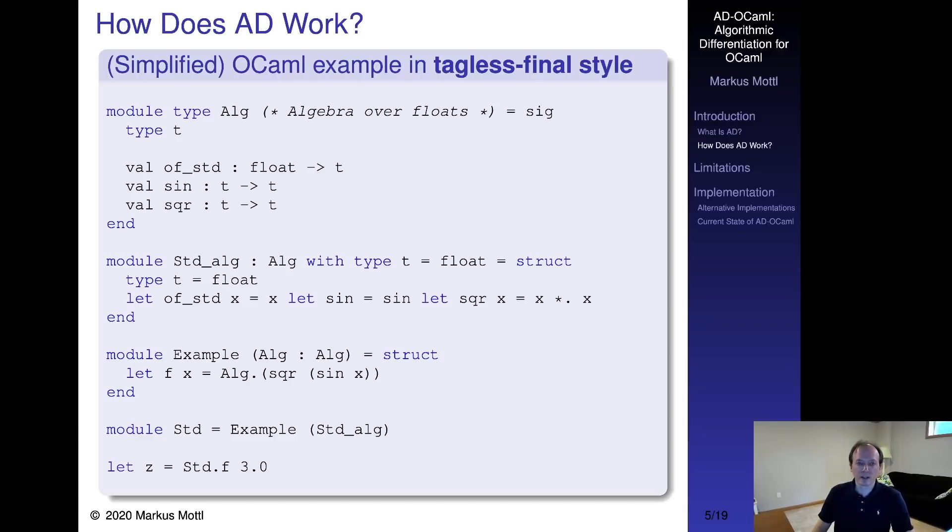The central concept of AD-OCaml is the algebra within which a user program is interpreted. Here is a simplified example of the signature of an algebra over floats. Besides some mathematical operations, it provides a function that lifts standard machine floats into that algebra. Here we instantiate the standard algebra where the abstract float is just a standard float. Now we define an example program that is parameterized over an arbitrary algebra. If we instantiate this example program using the standard algebra, we obtain an evaluator for the program over standard floats.